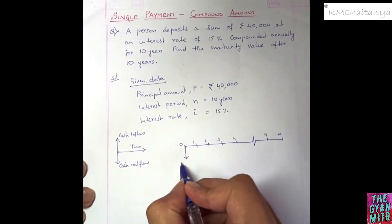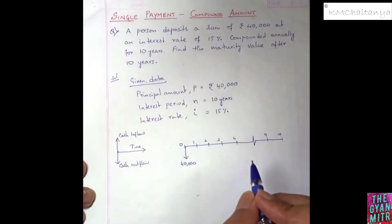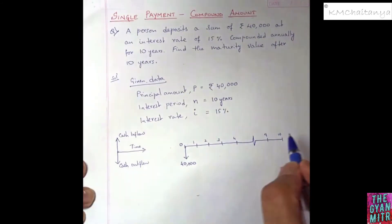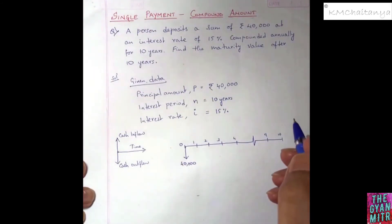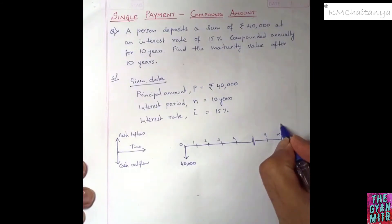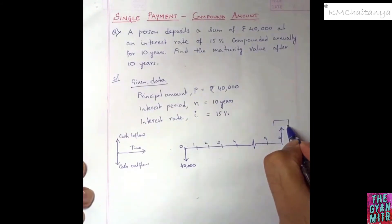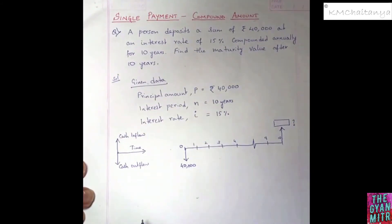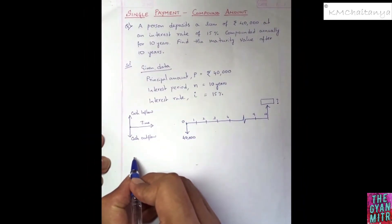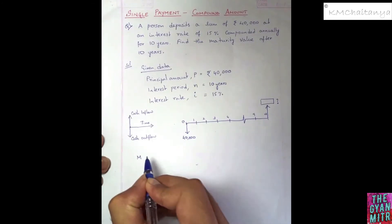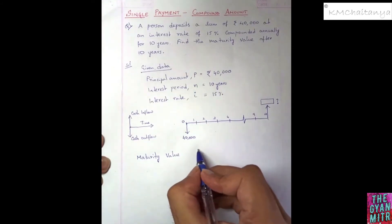Since the money is going from the person's account into the bank's account, it is a cash outflow of 40,000. After 10 years, the money from the bank account comes back into the person's account, which is a cash inflow. This maturity value is the unknown value we are supposed to determine.